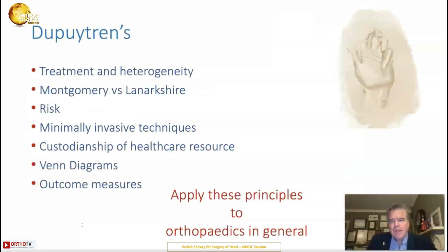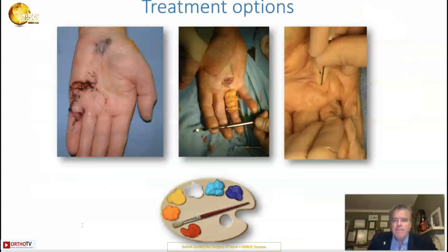Let's look at Dupuytren's disease. Some of these principles are applied to orthopaedics in general, so I hope you'll find this a really useful way of catching up on many different principles. Dupuytren's disease is heterogeneous — there are lots of different types of disease, which means lots of different types of treatment. We have to look at the science we learn in our training, in our journals and books, but apply that like an artist onto the patient in front of us.